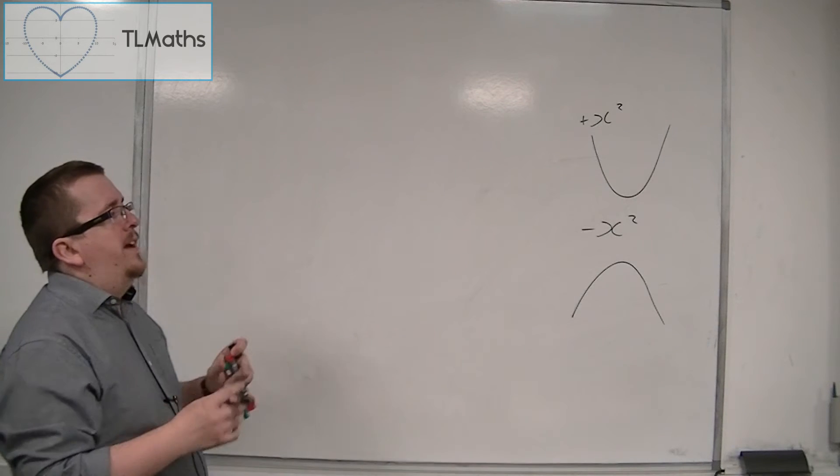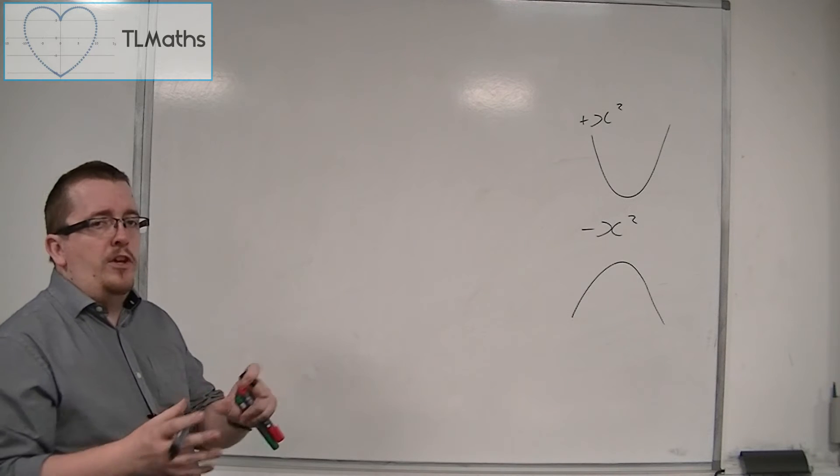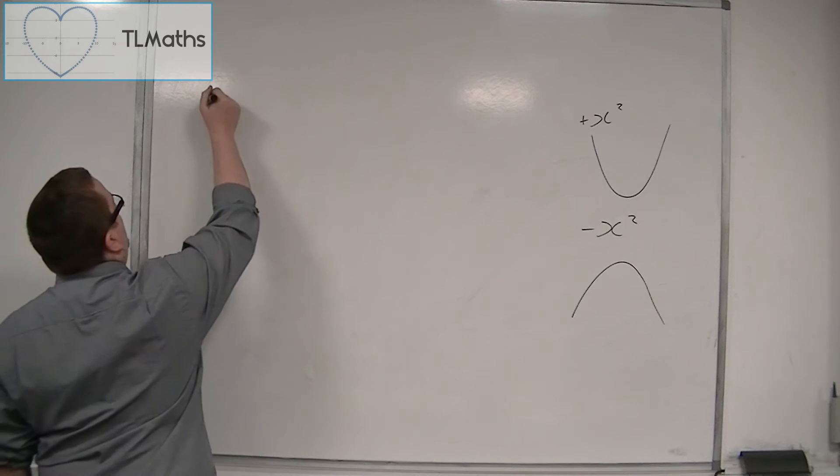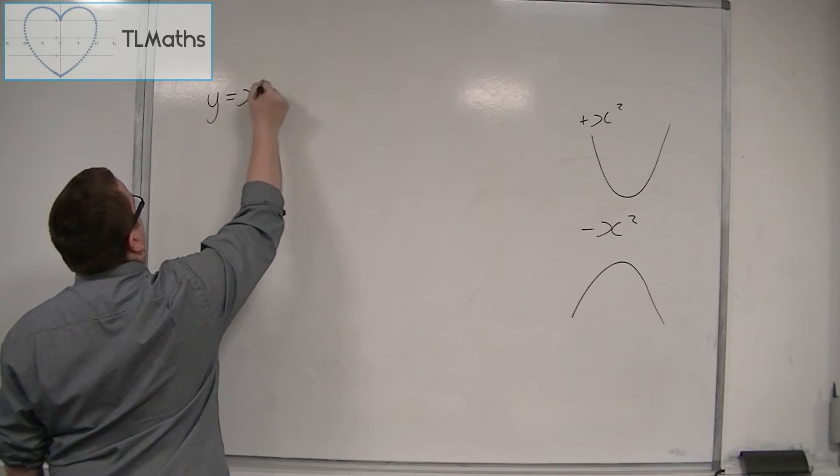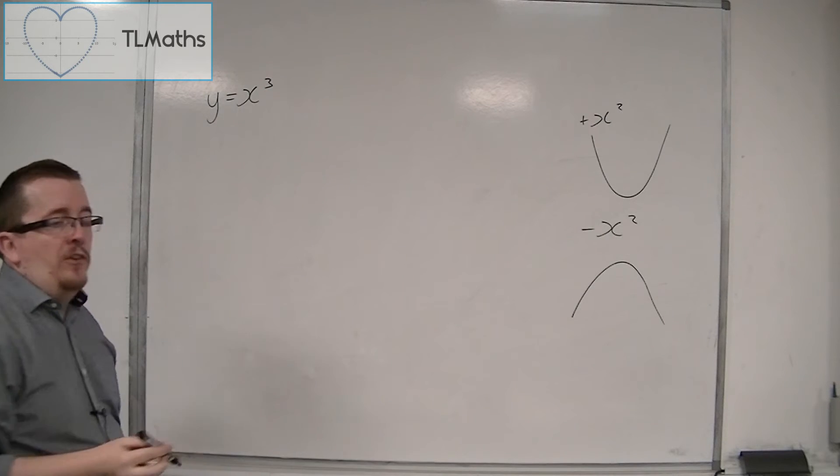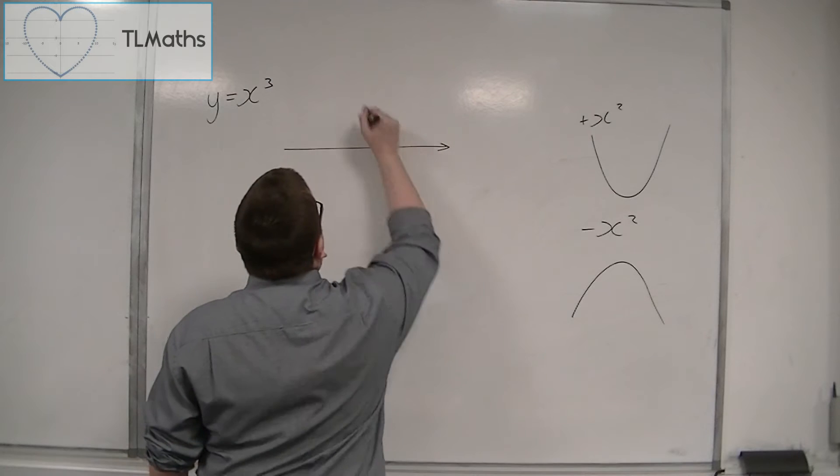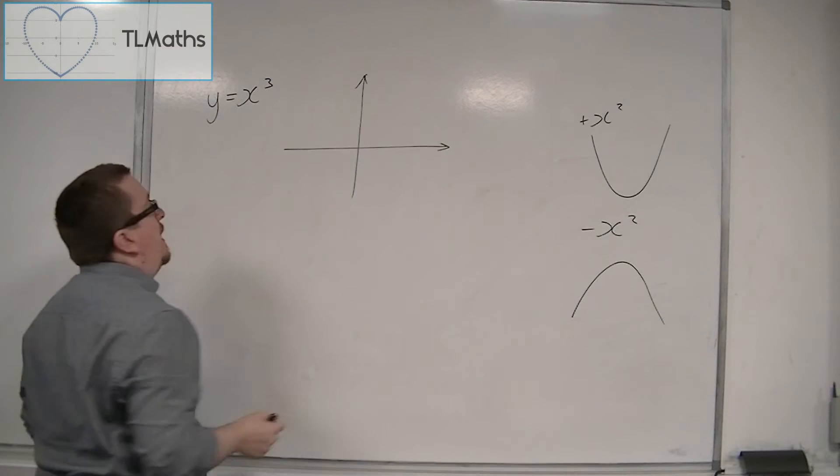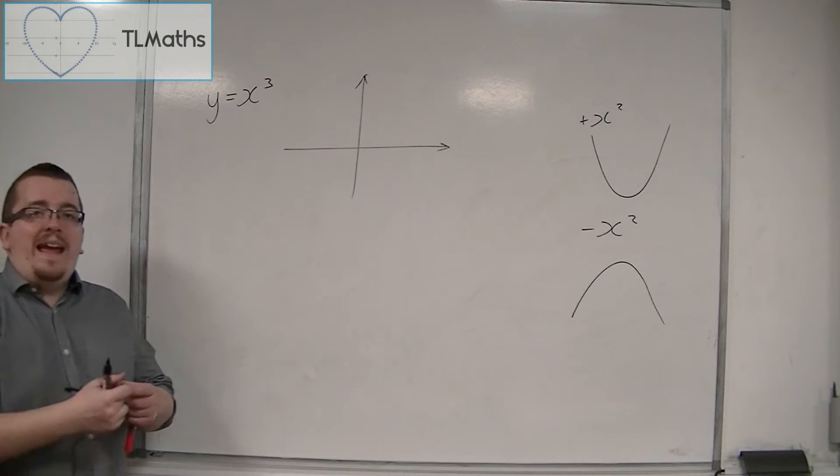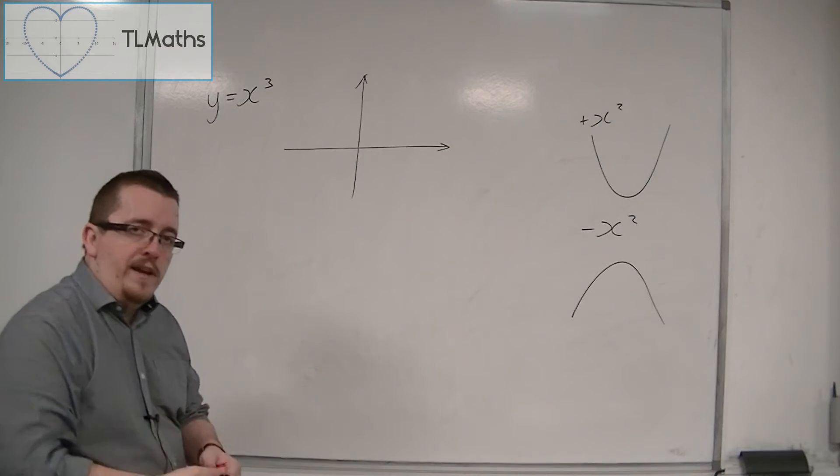So there is going to be a slight difference between x cubed and minus x cubed. So y equals x cubed, what does this look like? If we think about this logically, then when x is 0, y is 0, and so it must go through the origin.